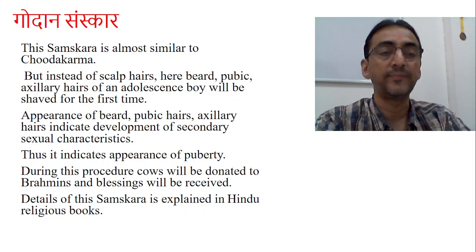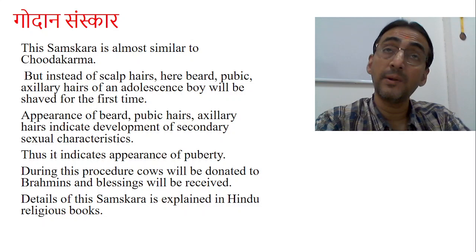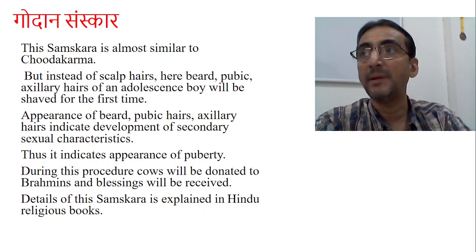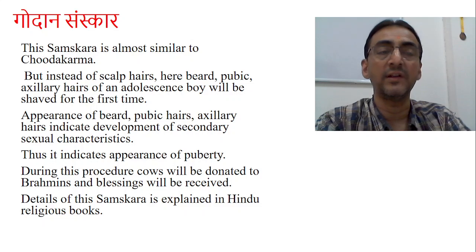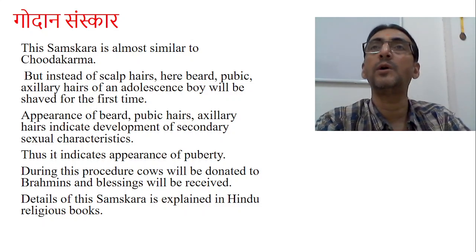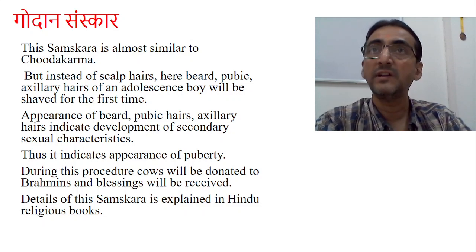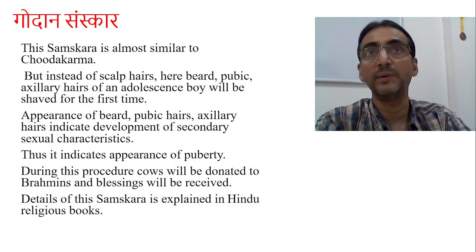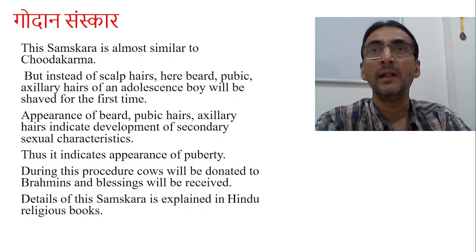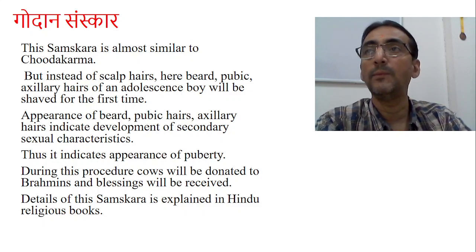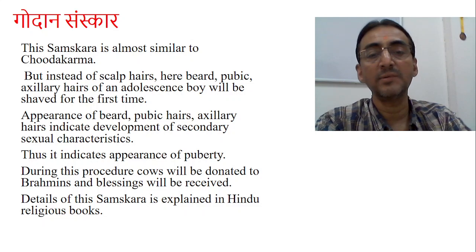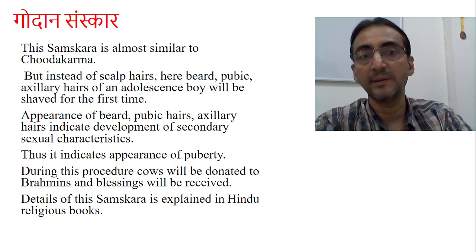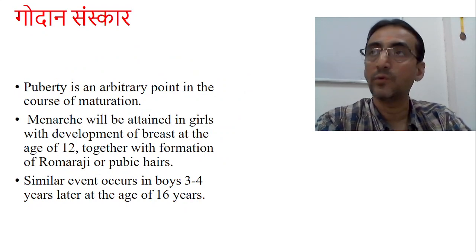This particular samskara indicates the appearance of puberty. Puberty is an arbitrary point in the course of maturation — a very important part. During this procedure, once the child has developed secondary sexual characteristics, as a matter of joy the cows will be donated to brahmins, dvijas, and gurus, and their blessings will be taken. Their blessings mean their guidance — the brahmanas, dvijas, or teachers will educate the parents and also the kids how he has to take care of himself in the adolescence period, because adolescence is a very crucial period with every chance of missing the track.